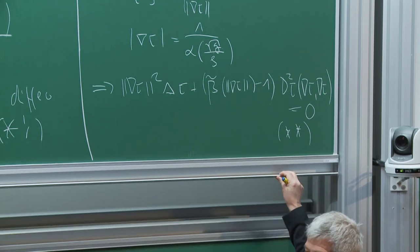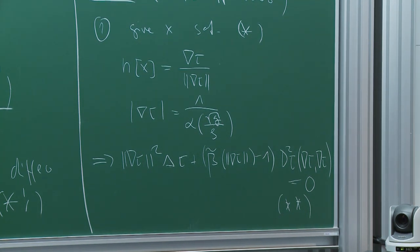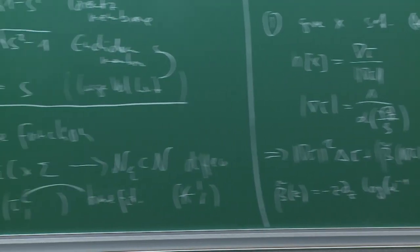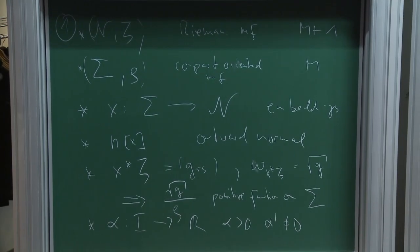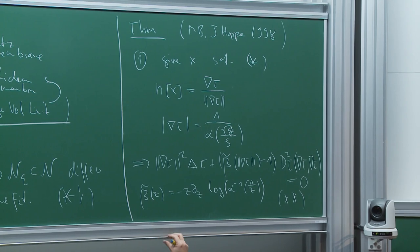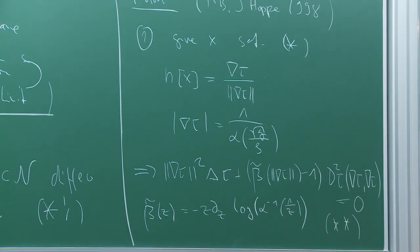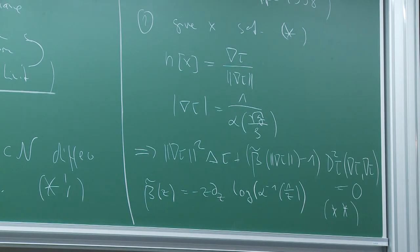So there are quite obvious things that this is just the gradient with respect to this embedding metric over the norm. And you can also prove that this is 1 over alpha of square root G over rho. This you get by just using that this is an inverse. You take the derivative and you have two equations which give you this. But then if you derive this equation with respect to the spatial variables, you get a second order equation for tau.